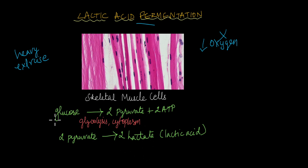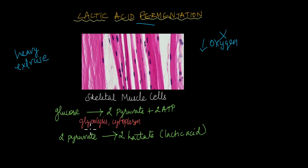Initially, glucose is converted to two molecules of pyruvate by the process of glycolysis, which takes place in the cytoplasm. Because it is anaerobic respiration, there is no need for any other cell organelle to be involved. Within the cytoplasm itself, pyruvate is converted to lactate, which is a form of lactic acid. Lactic acid is a three-carbon molecule, just like pyruvate.